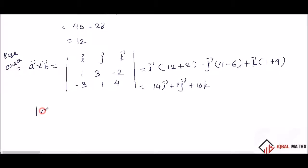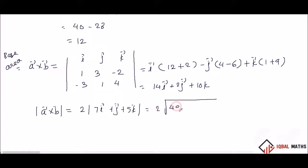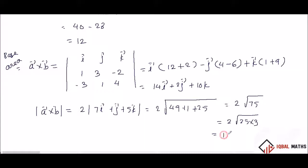Now the modulus of A cross B. Modulus of A cross B equals square root of 7 squared plus 1 squared plus 5 squared — wait, that is square root of 196 plus 4 plus 100 equals square root of 300. Square root of 300 equals square root of 25 into 3, which is 5 times square root of 3, so 10 root 3. This is a cross b.